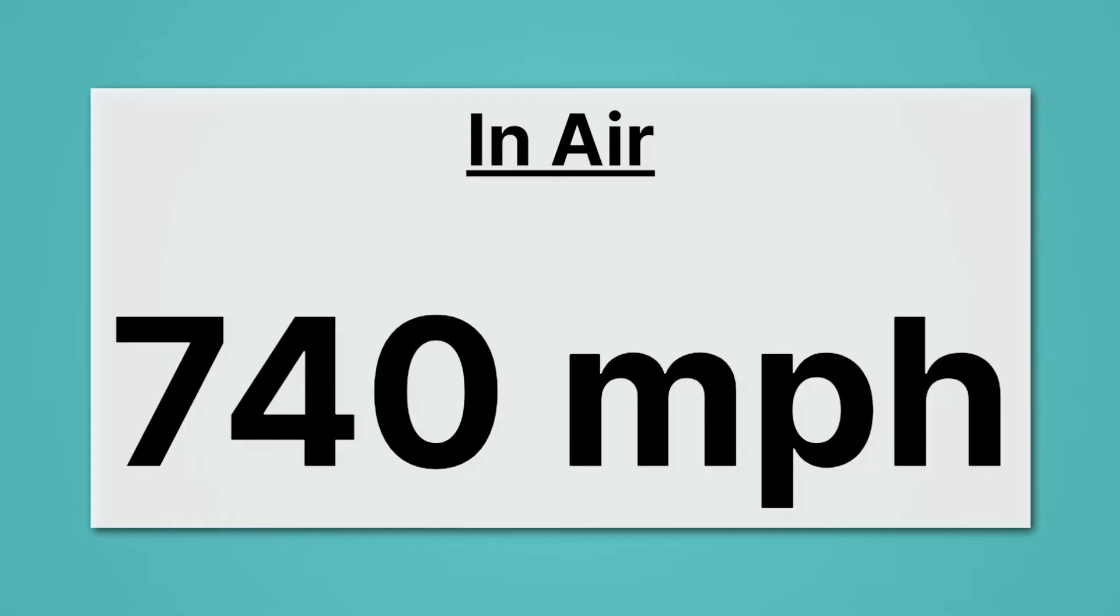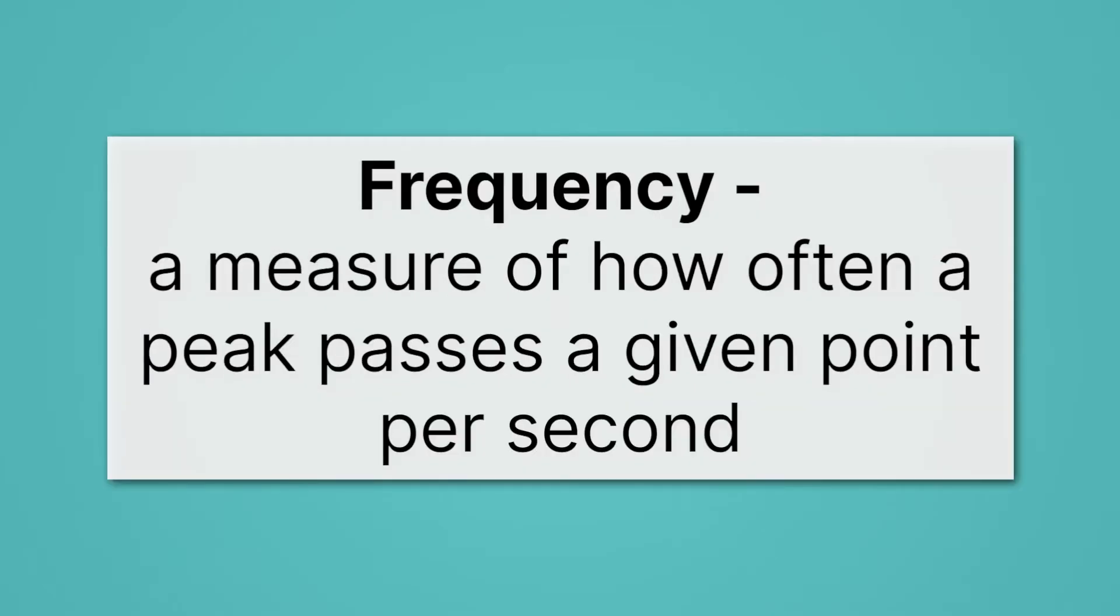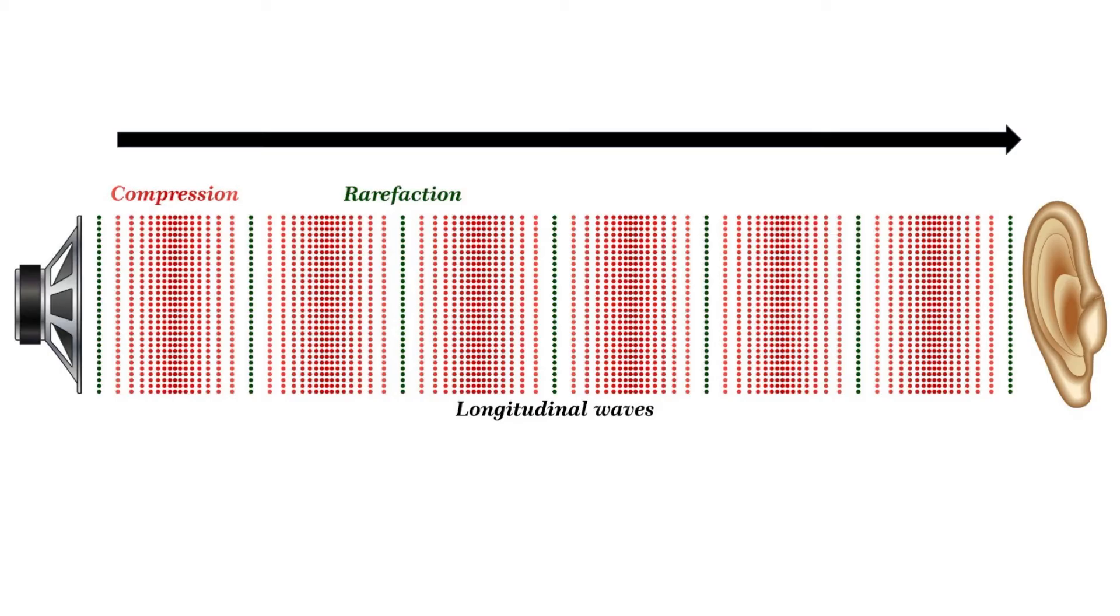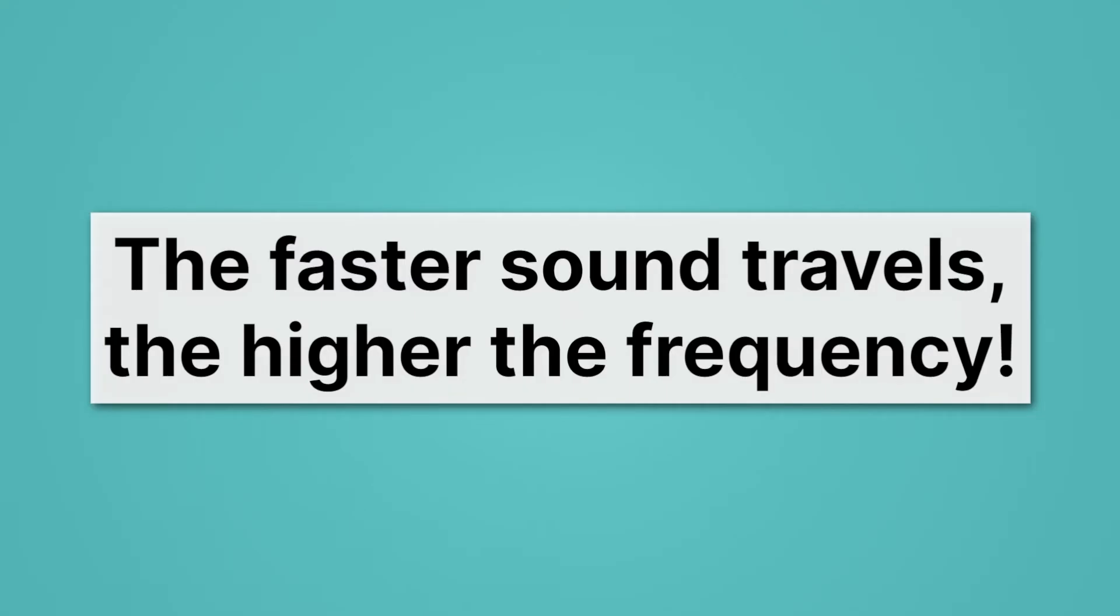There's a relationship though between the speed at which our sound moves and the frequency. The faster sound travels, the higher the frequency. Now let's recall what frequency is. Frequency is a measure of how often a peak passes a given point per second. To understand its relationship to speed, let's take a look at another series of sound waves. Here we've shown them clearly as longitudinal waves with compressions and rarefactions. The sound waves are traveling from the speaker to the ear. Now, how fast that wave moves changes how often there are peaks. The faster the wave, the more frequent there are peaks. So what that means is the faster sound travels, the higher the frequency.